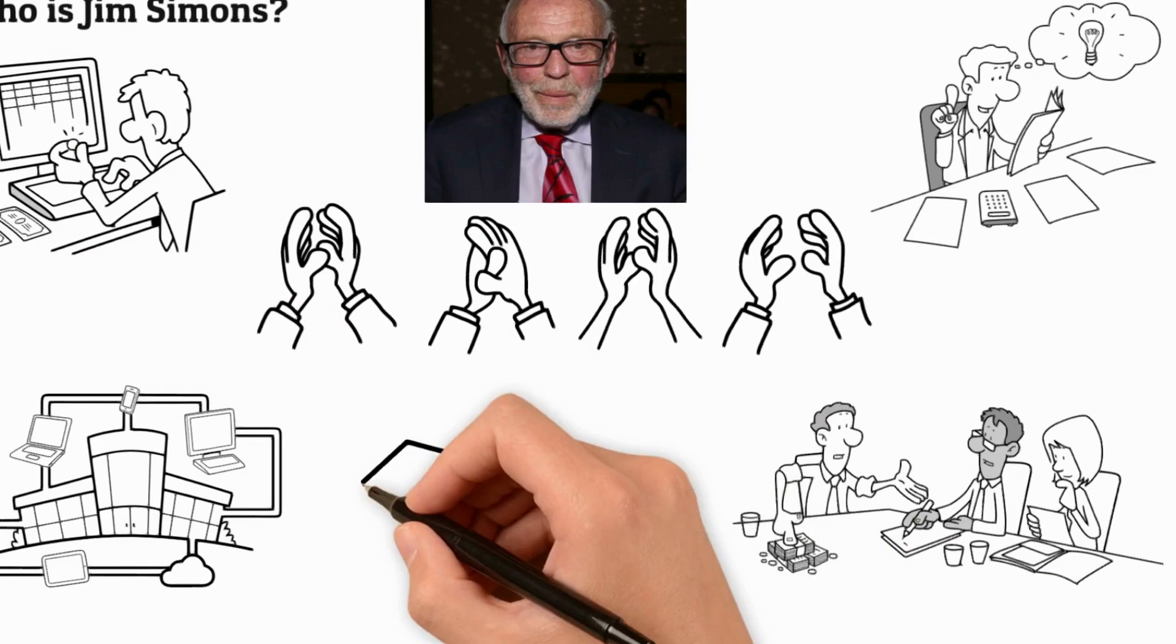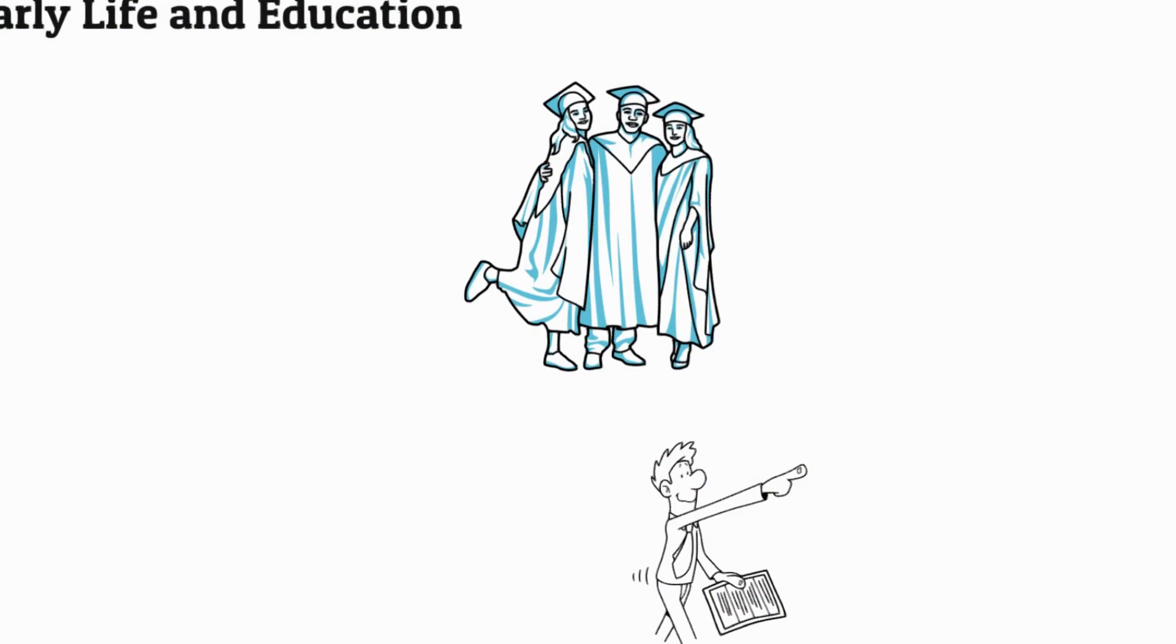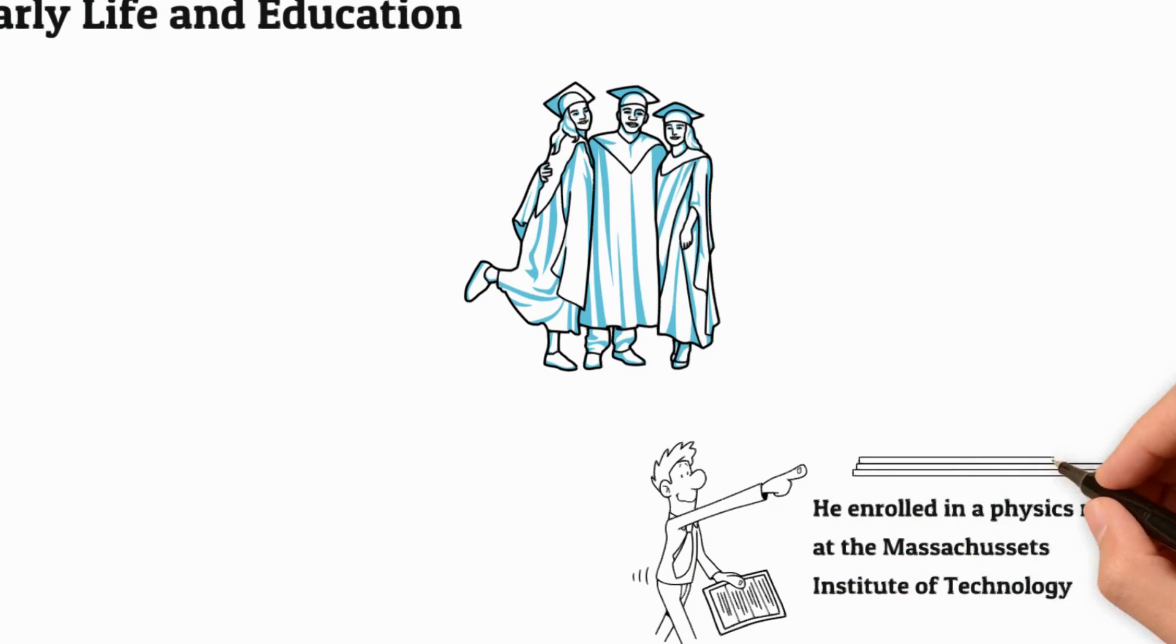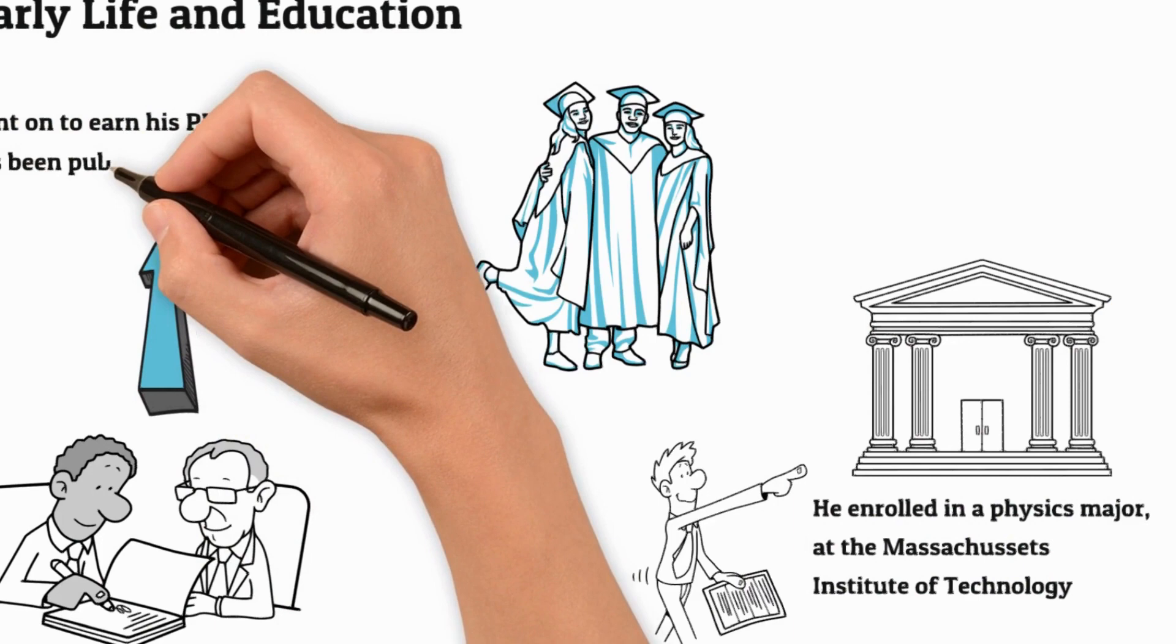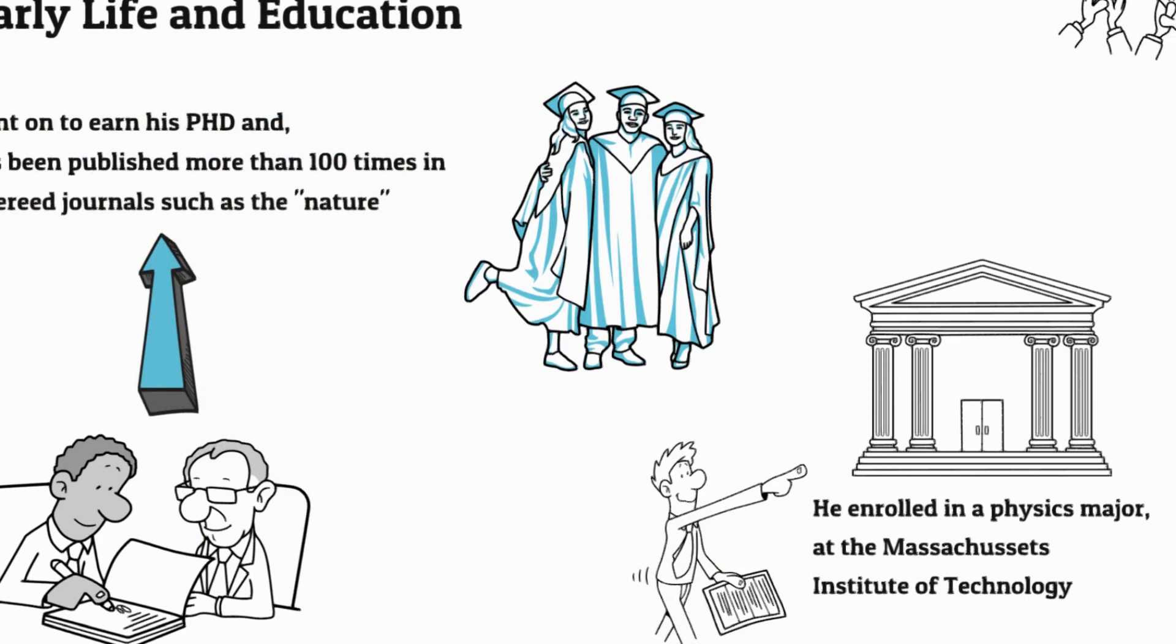Early Life and Education: Born in the Bronx, Simons graduated from Brooklyn Technical High School. He enrolled in a physics major at the Massachusetts Institute of Technology but changed his major to mathematics after taking a basic mathematics course with Raymond Bauchner. From there, he went on to earn his Ph.D. and has been published more than 100 times in refereed journals such as Nature. He also received honorary degrees from MIT and Harvard University.